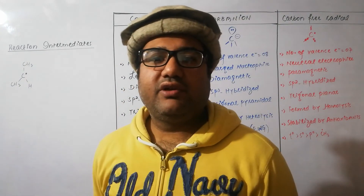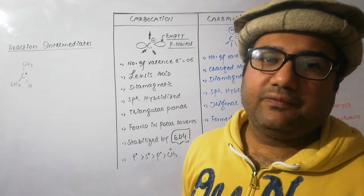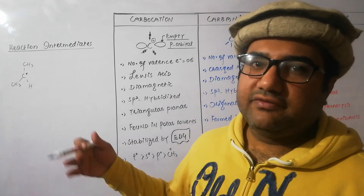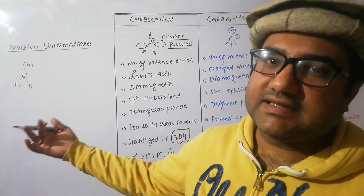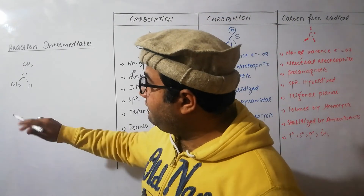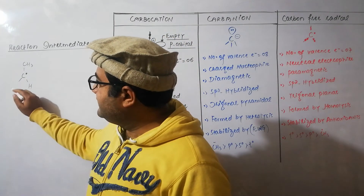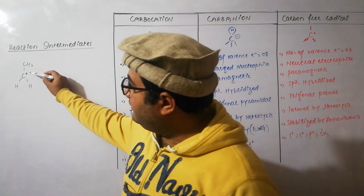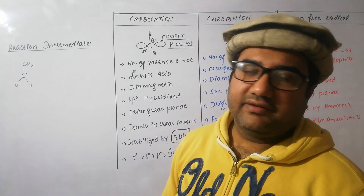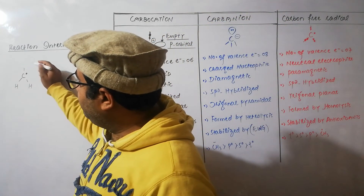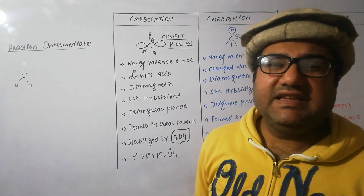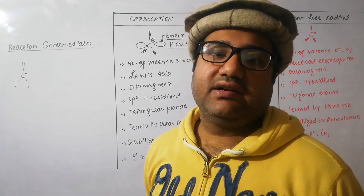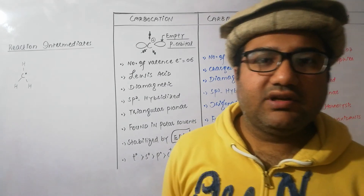For a secondary free radical, the single electron is more exposed and can be reached more easily compared to the tertiary, so it will be involved in reactions more easily, making it more reactive and less stable. For primary, only a single bulky group surrounds the carbon, so the electron is quite exposed and more reactive. For methyl free radical, this electron is easiest to approach because no bulky group is protecting it — there is no steric hindrance — making it the least stable or most reactive one.